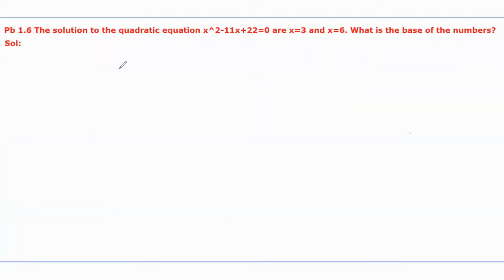Hello guys. In this video I will explain the solution to the given problem: the solutions to the quadratic equation x squared minus 11x plus 22 equal to 0 are x equal to 3 and x equal to 6.